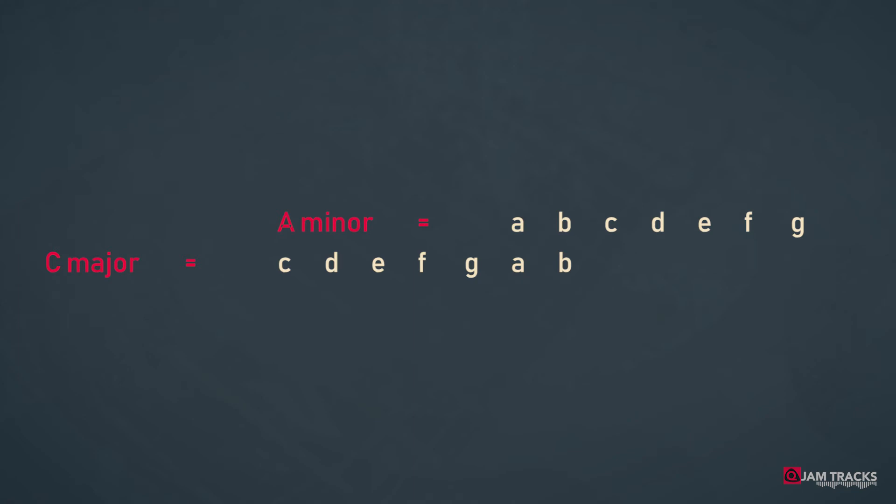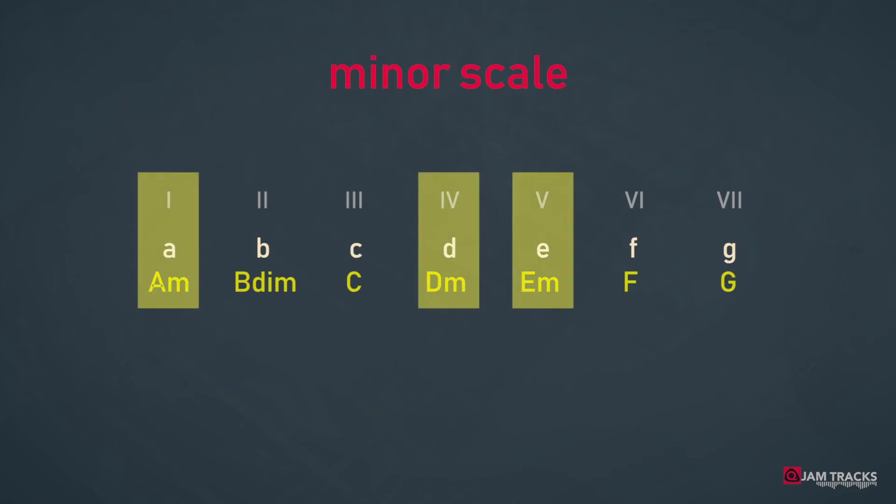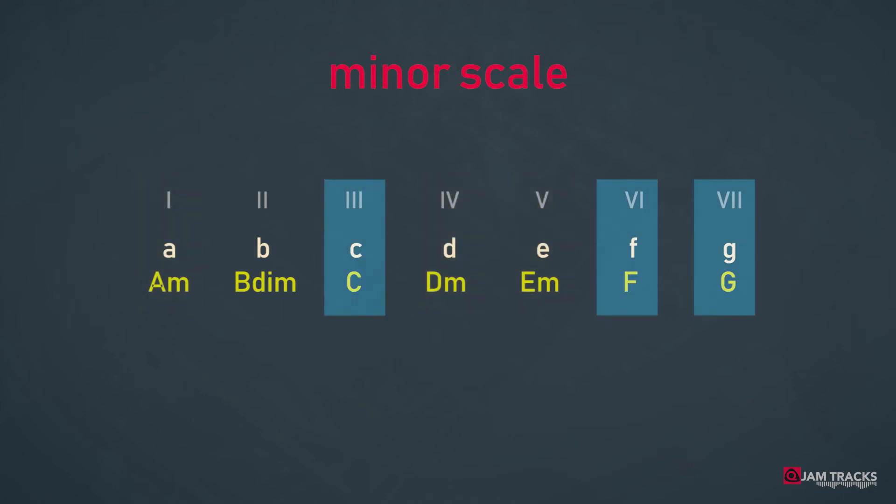Because the notes are all the same, the type of chords are also the same. So in a minor key we'll see a group of three minor chords, a group of three major chords, and a strange kid in town, the diminished chord. We'll find the minor chords on the first, fourth and fifth note of the minor scale. The major chords are on the third, sixth and seventh note of the minor scale. And on the second note we'll come across the diminished chord.